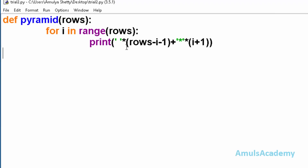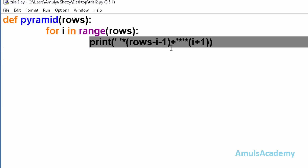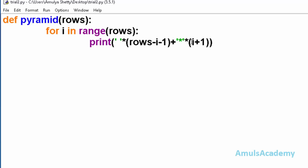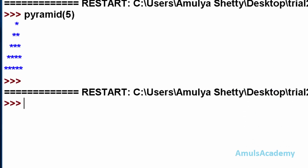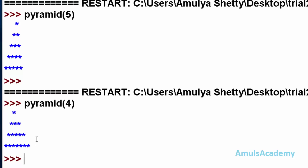This code is similar to the previous one, but here instead of nested for loops we are using a single print statement. If you want you can change this to produce stars. Now I will save this and run this - I will call the function pyramid and pass 4. Here we can see the output: this is the odd number of stars.